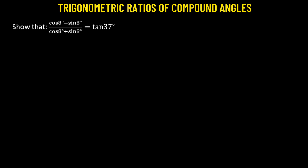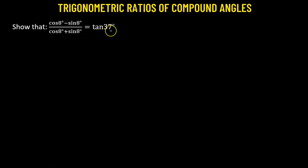In this problem, we need to show that cosine of 8 degrees minus sine of 8 degrees, divided by cosine of 8 degrees plus sine of 8 degrees, equals tangent of 37 degrees.